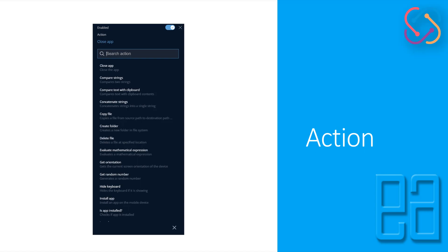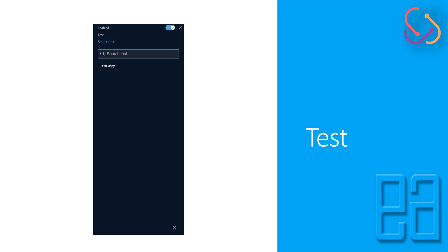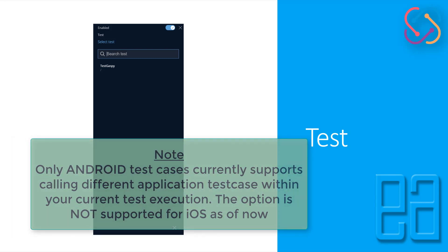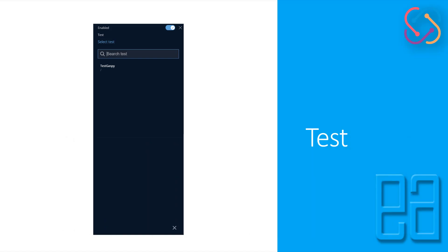Add-ons are something we haven't discussed yet in our course, but we'll cover how to write an add-on, upload it, and use it within test cases. The next type is test — you can reuse a test within a test using this option. This is very helpful, for instance, if you want to authenticate your application using another app, call the authenticator app, and then fall back to the application under test. Someone on LinkedIn asked about reusing a test within a test — this is the answer.